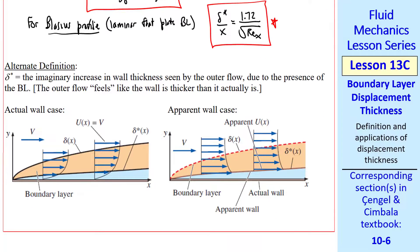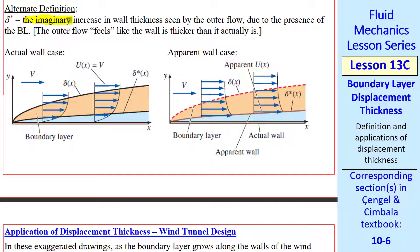Here's an alternate definition of delta star. Delta star is the imaginary increase in wall thickness seen by the outer flow due to the presence of the boundary layer. In other words, the outer flow feels like the wall is thicker than it actually is. I sketch the actual wall case here and the apparent wall case here. This is the same as we had above, but I plot both delta star and delta for this boundary layer. But delta star causes the outer flow to feel like this wall is thicker.